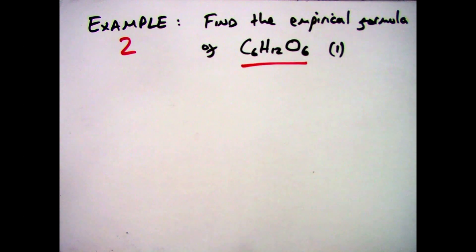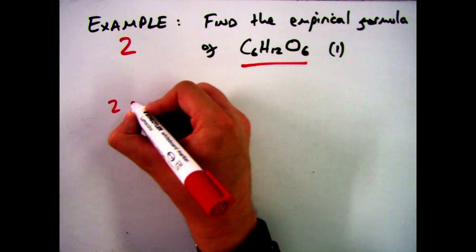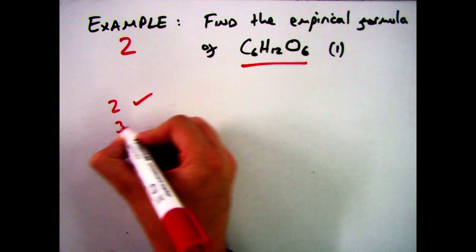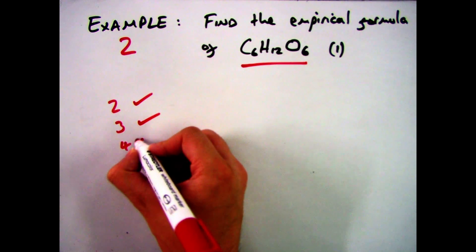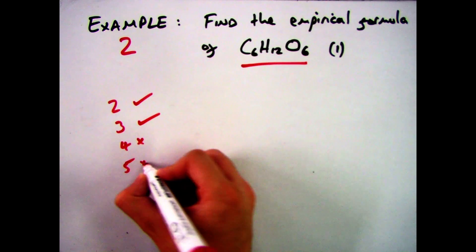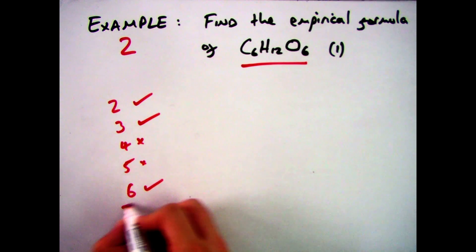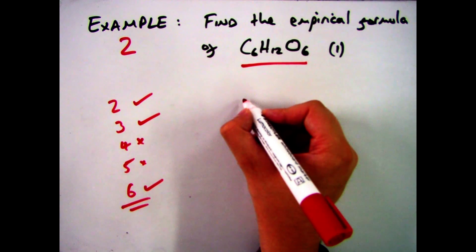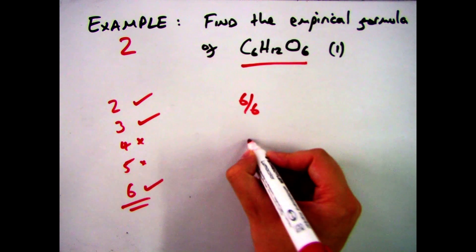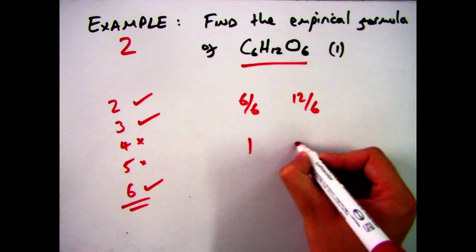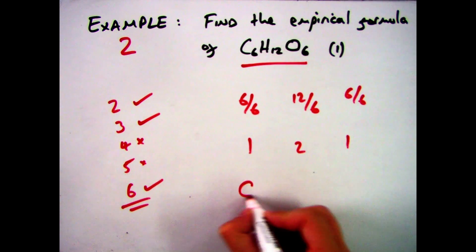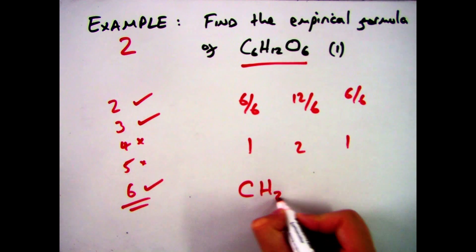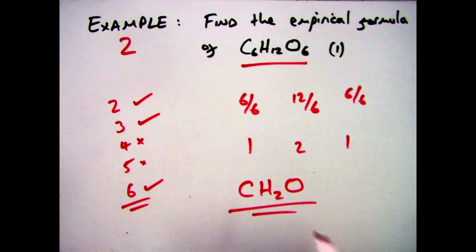If we have a look at a second example then. So we've got the empirical formula of C6H12O6. All three can be divided by two, all three can be divided by three. They can't be divided by four, they can't be divided by five, and they can be divided by six. Now that is the maximum number you can go up to. So therefore divide all by six. Six by six is one, twelve by six is two, and six by six is one. Therefore my empirical formula is C1H2O1.